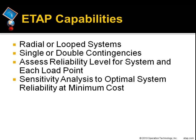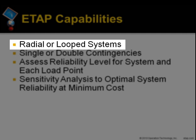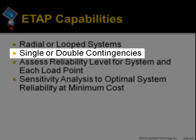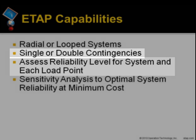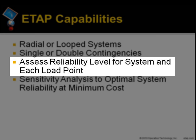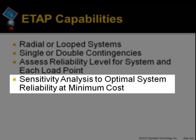ETAP capabilities: ETAP allows the reliability analysis of radial as well as loop systems, considers single and double contingencies, assesses reliability level for the entire system and at each load point based on component failure model and system configuration. ETAP sensitivity analysis identifies the optimal place to make the greatest improvement at a minimum cost.